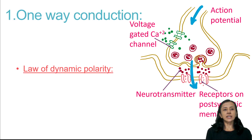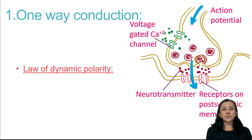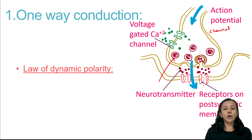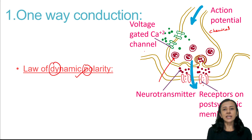Starting with the first: one way conduction. Impulses are transmitted from presynaptic to postsynaptic neuron in chemical synapses. Impulse will not pass in the opposite direction. This is also known as the law of dynamic polarity — dynamic means in one direction, and polarity means polarization — action potential passes in one direction.